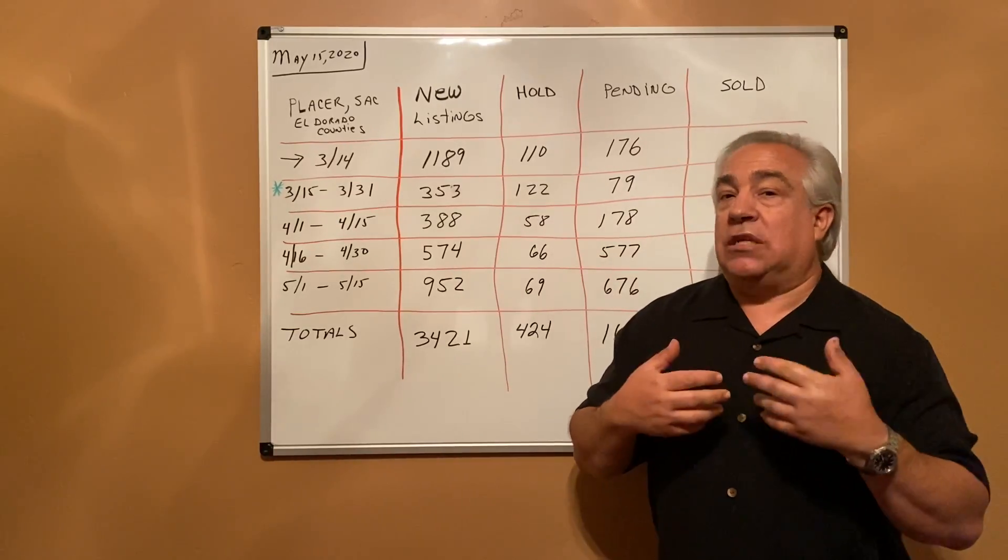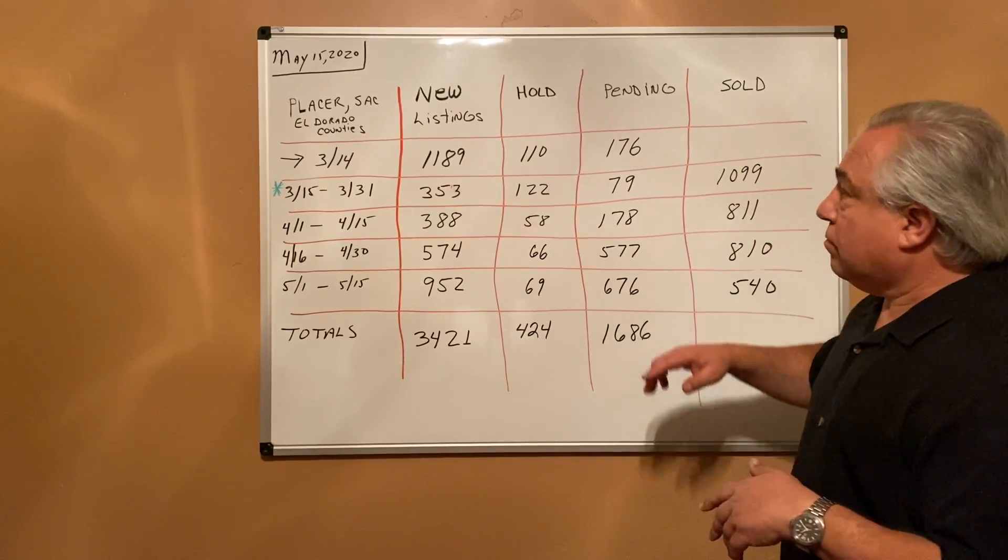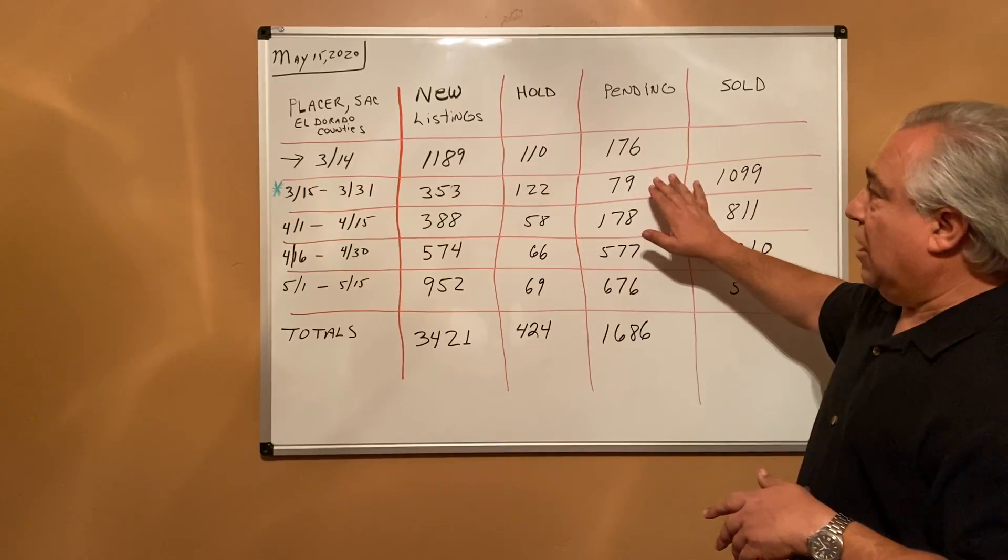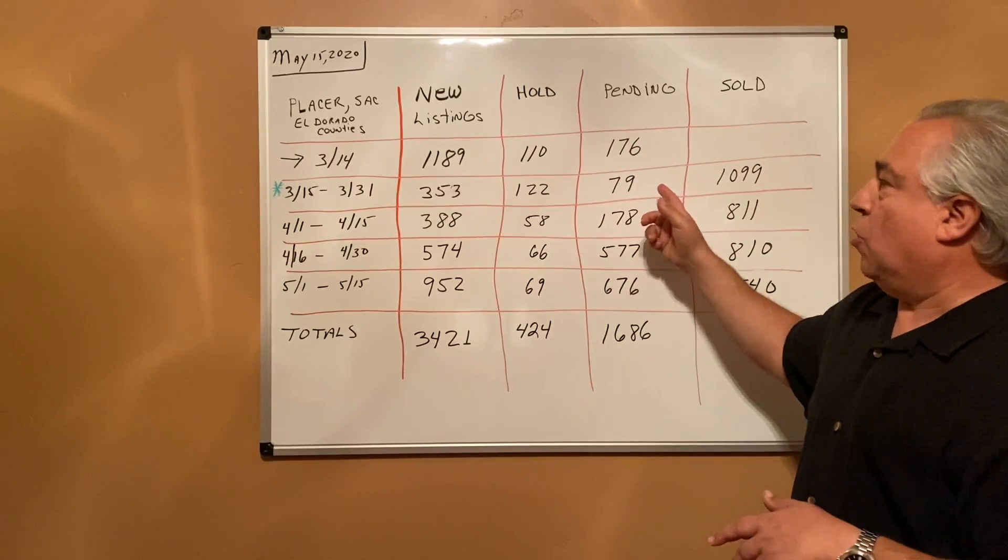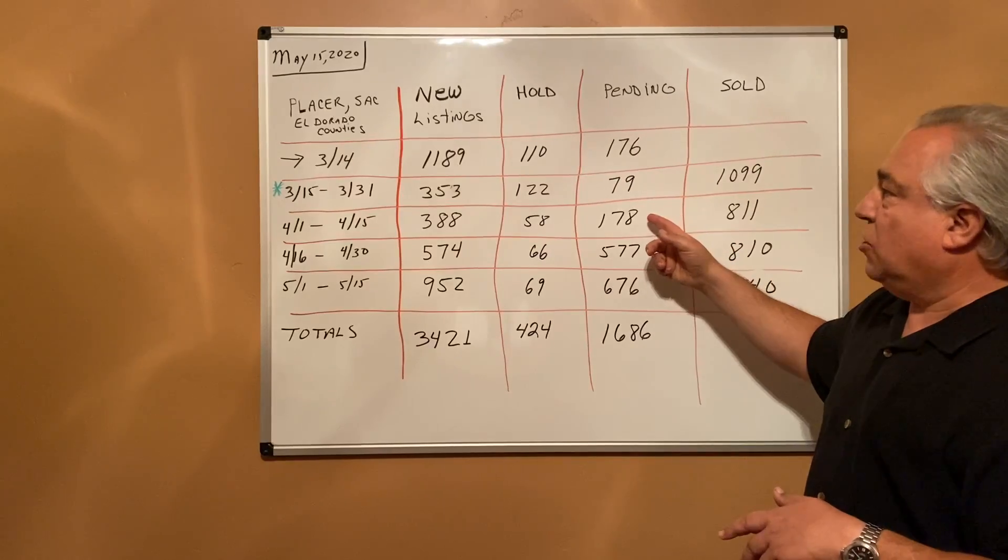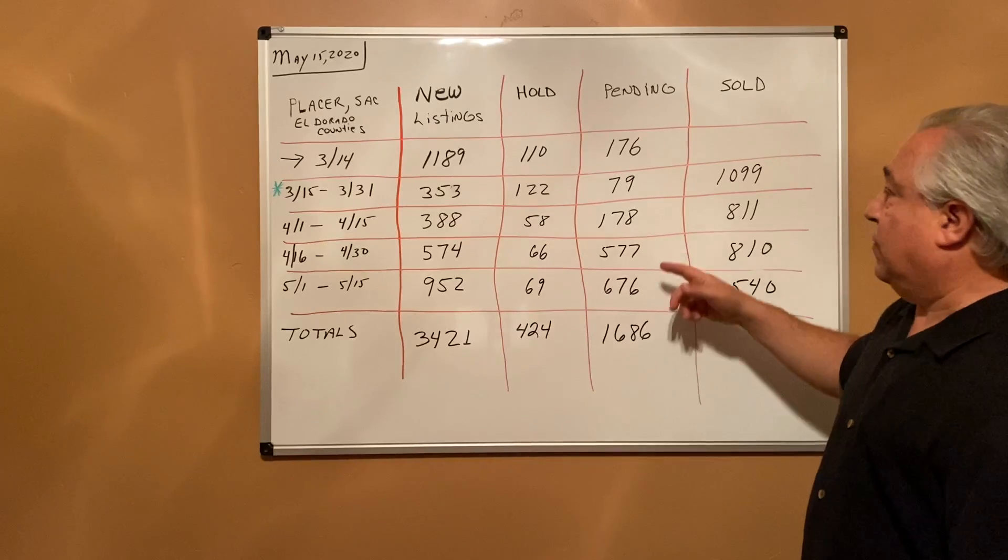As far as pending—when I say pending that means a home that has gone under contract—when the stay-at-home order went in place for those two weeks we only had 79 homes go under contract. Then the next two weeks it was 178, and then for the last 30 days I've seen it go up to 577 and 676 homes under contract.